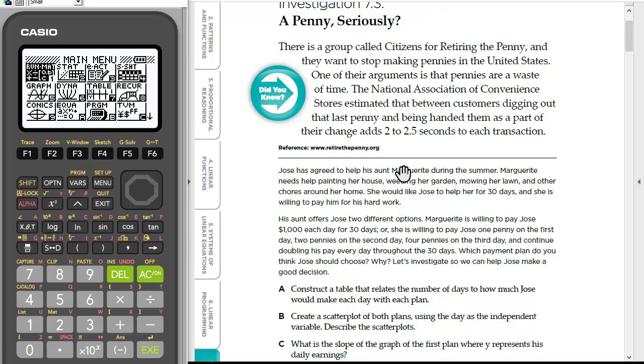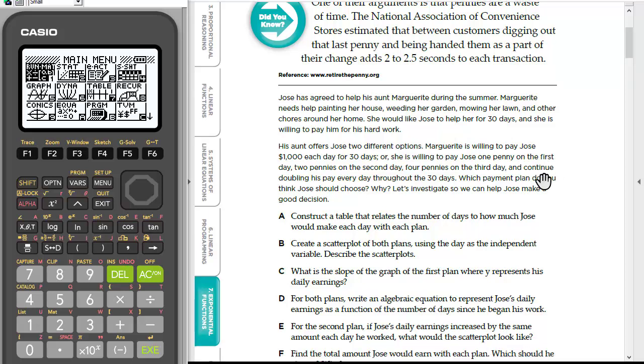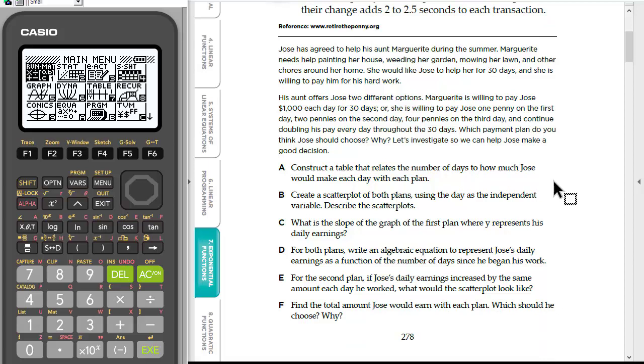So here's an activity where you may be familiar with it. Students are given an option. They're doing a job and they're going to get paid for 30 days and they can either get paid $1,000 a day or a penny on the first day, double that on the second day, double the next day. So each day it doubles from the day before and they have to decide which payment plan you should choose. The question seems obvious at first. Obviously go with $1,000 a day. But let's actually collect some data, do some comparison, look at some tables and graphs and really make an informed decision.